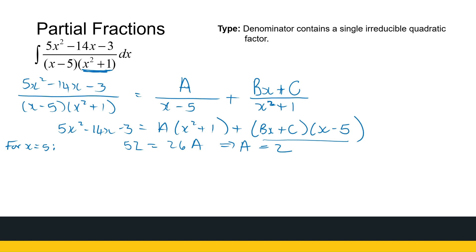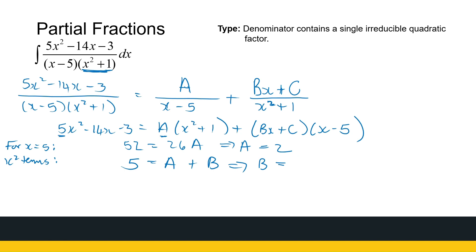Now there's nothing else I can substitute in to make a term equal to 0, so I'm going to start looking at specific terms. I'm going to start with the x squared terms. On the left-hand side I've got 5x squared. On the right-hand side, if I multiply out, there will be Ax squared plus bx squared — there won't be any cx squared. I've got A equals 2, so b must equal 3.